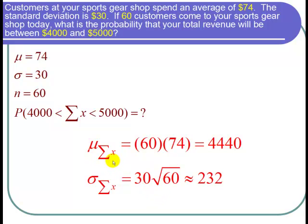So the mean of the sum is 60 times 74, which equals 4440. The standard deviation of the sum is 30 times the square root of 60, which is approximately 232.